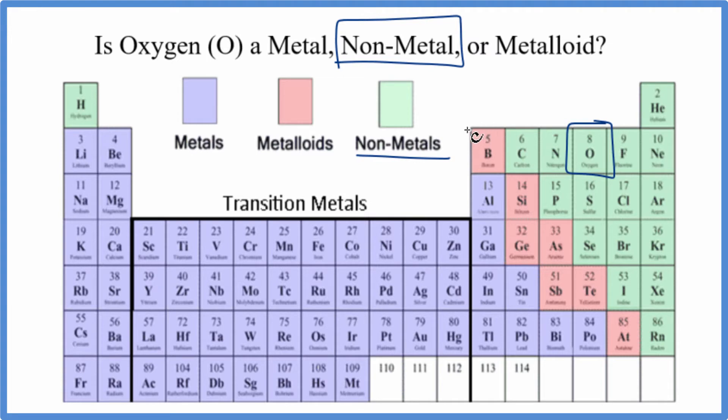I recommend that you memorize the metalloids, then you'll know the left is going to be a metal — except hydrogen — and the right will be nonmetals.